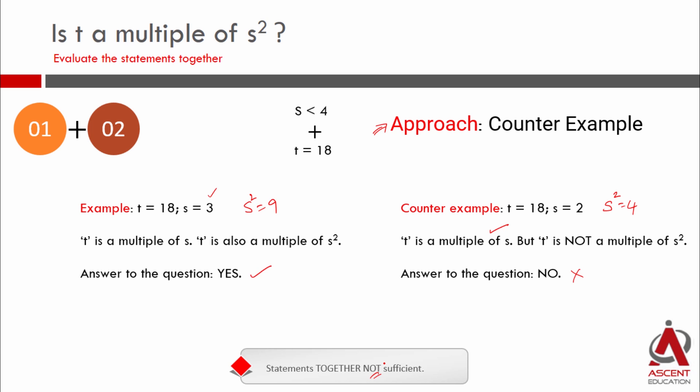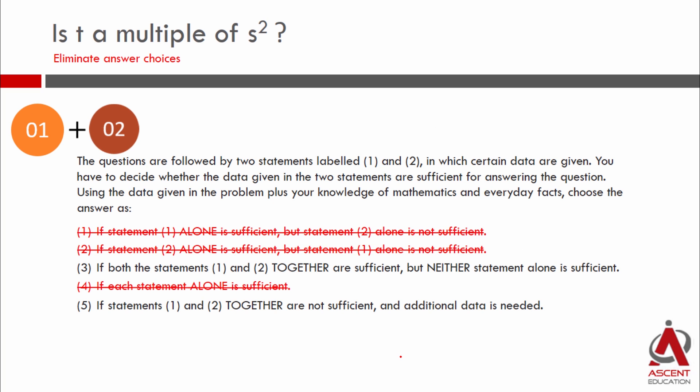we have not been able to get a definite yes or a definite no. So statements together are not sufficient. We said earlier it's either 3 or 5. If combined they don't give an answer, we will eliminate 3. Our answer choice is 5.